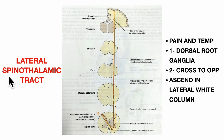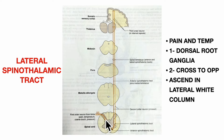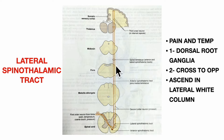The lateral spinothalamic tract carries the sensations of pain and temperature. These sensations are carried by the dorsal root of the spinal nerve to first order neurons starting in the dorsal root ganglia. These neurons synapse with neurons in the dorsal horn of the grey matter of the spinal cord. The second order neurons begin here, cross immediately to the opposite side close to the central canal, and ascend as a tract in the lateral white column — the lateral spinothalamic tract. It ascends to the thalamus, where it relays to form the third order neuron that sends sensory information to the cerebral cortex.